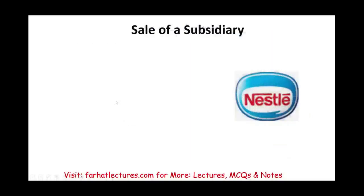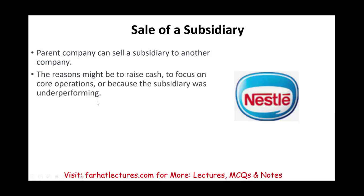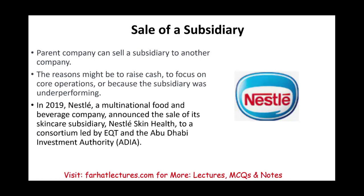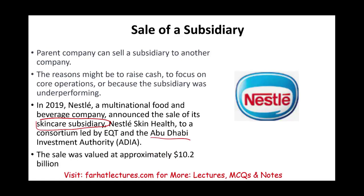Sale of a subsidiary: the parent company could also sell a subsidiary to another company. Just like they buy a subsidiary, they can sell it. The reason is often to raise cash, to focus on core operations, or because the subsidiary was underperforming. An example is in 2019, Nestlé — a multinational food and beverage company — announced the sale of its skincare subsidiary to Abu Dhabi Investment Authority for approximately $10.2 billion.